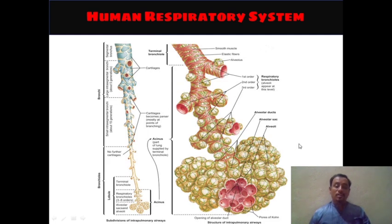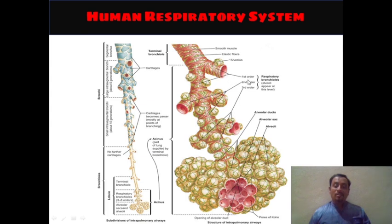The next thing shows a very detailed view of the respiratory bronchioles. Here you can see the terminal bronchiole. After the complete differentiation of the primary bronchus into secondary and secondary into tertiary, at the end the respiratory bronchioles begin. This terminal bronchiole is where the respiratory part starts. It is made up of surrounding smooth muscle and elastic fibers, with alveoli also present at this structure.